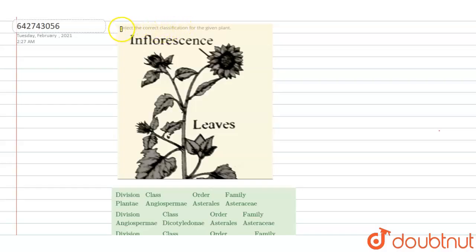Hello everyone, so here is the question: select the correct classification for the given plant. So here we have to select the correct option in which there is a correct classification of this given plant. Here you can identify this plant is of sunflower.